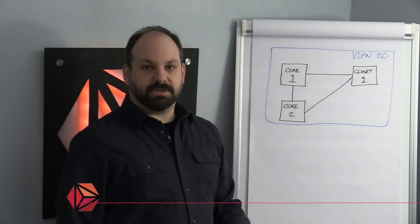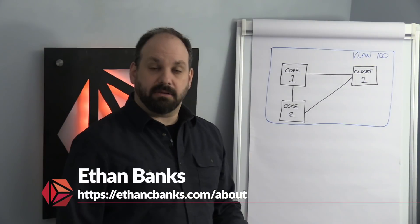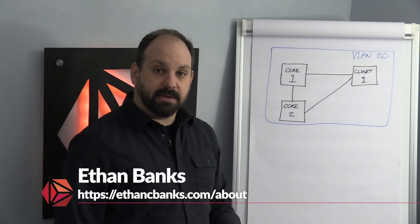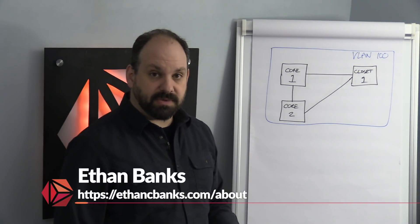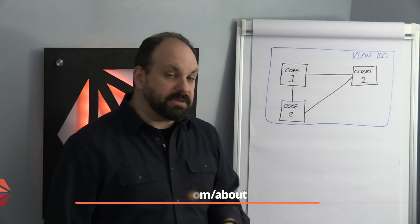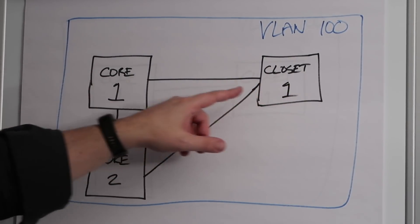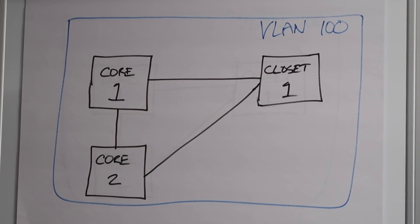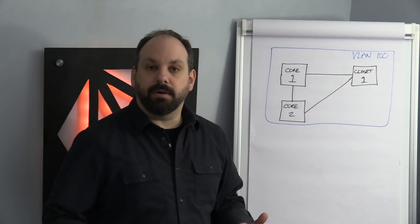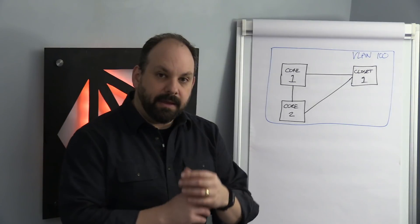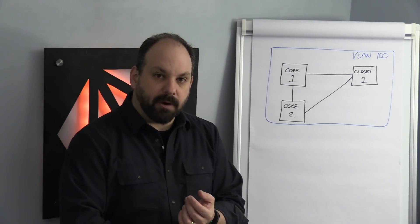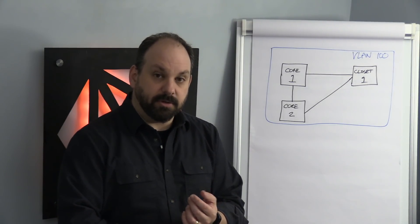In this diagram, we've got three switches: two core switches and a closet switch that is dual uplinked, one link to each of those core switches. In this configuration, we notice we've got a loop. Core 1 connects to Core 2, which connects to closet switch 1, which goes back to Core 1, and loops are a no-no in Ethernet networks. Can't have them. Ethernet can't handle that. The network will go down in the face of a loop.